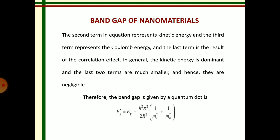The kinetic energy term is dominant — it is very large — while the last two terms (Coulomb and correlation) are very much smaller and hence are neglected. Finally, the simplified band gap energy of a quantum dot is: E_g' = E_g + (ℏ²π²)/(2R²) × (1/m_e* + 1/m_h*).